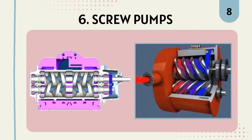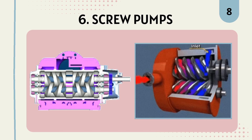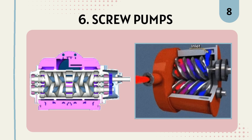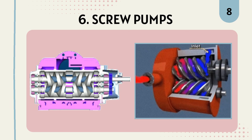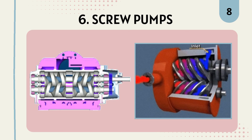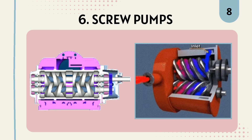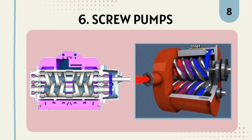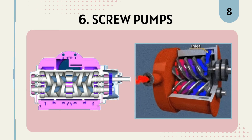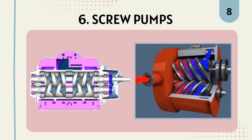The next type of pump is the screw pump. Screw pumps use rotating screws to move fluid along the screw's axis. They are suitable for handling highly viscous fluids and are commonly used in chemical processing and oil and gas industries.